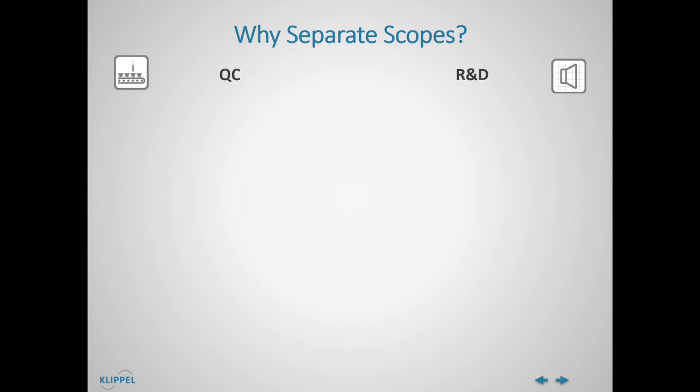What is the reason to have a dedicated QC system? Well, it is clear that we have two very different requirements, constraints and operators in the production line compared to the R&D lab. In high volume production, the cycle time is usually as short as possible. Time is money. Production lines are highly automated. This includes testing, of course.